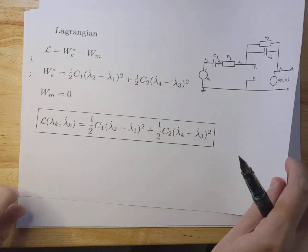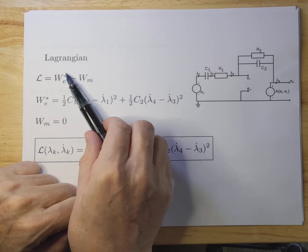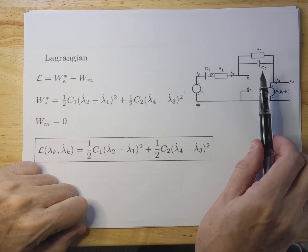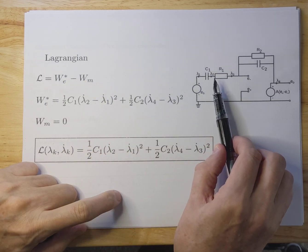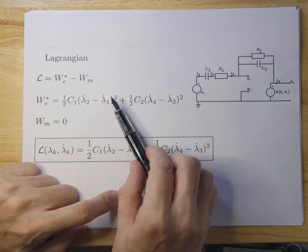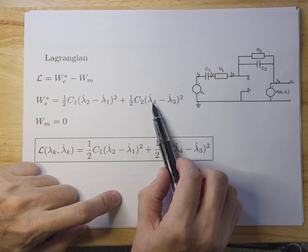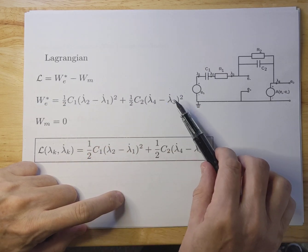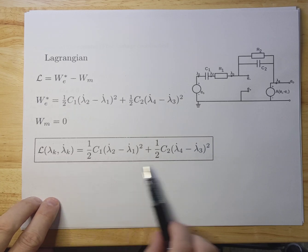Our next step is to come up with a Lagrangian, which is a combination of potential and kinetic energy. The kinetic energy here is the energy in the capacitors, and the potential energy would be the energy in the inductors — but there are no inductors in the system, so that's zero. The energy in the two capacitors is: for C1, one-half C1 times (lambda 2 dot minus lambda 1 dot) squared; and for C2, one-half C2 times (lambda 4 dot minus lambda 3 dot) squared. This is the total Lagrangian.